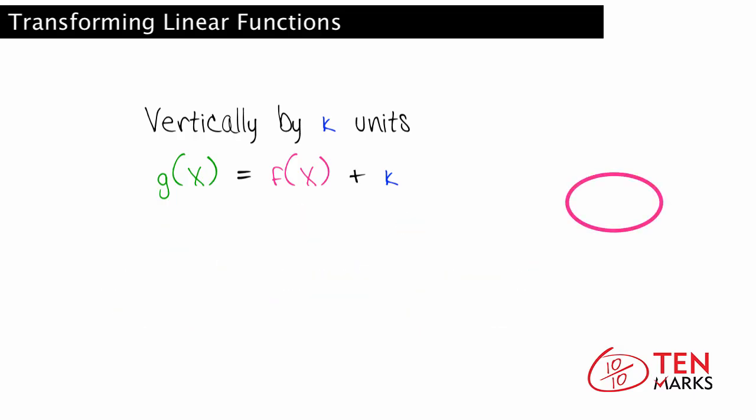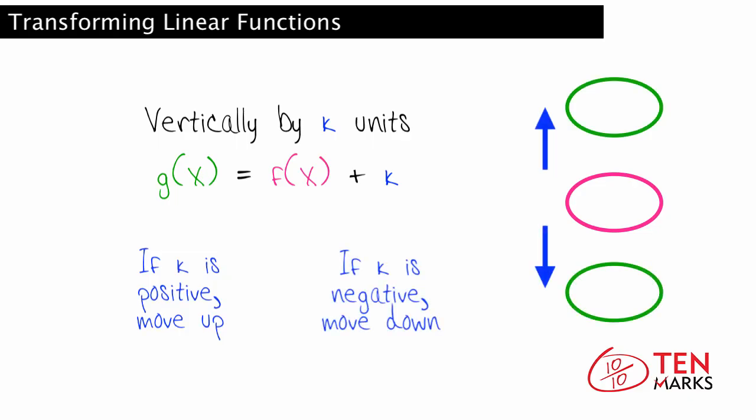If k is positive, the graph moves up by k units. If k is negative, it moves down by k units.